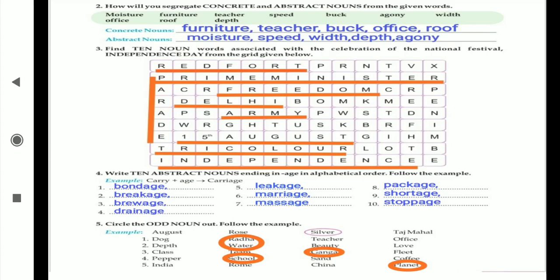Now what is the next one? Find ten noun words associated with the celebration of the national festival. There are many national festivals like Republic Day, Independence Day, but here it's mentioned regarding Independence Day from the grid given below. Red Fort, parade, Prime Minister, freedom.